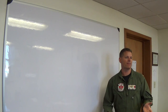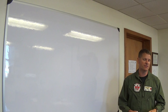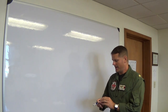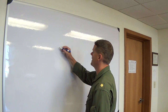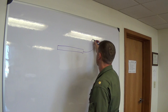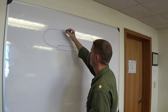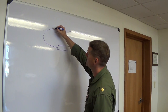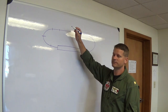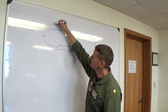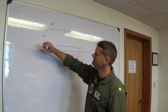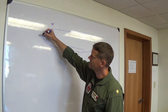Let's talk about the landing pattern as if we're going to Bruton today. Pattern altitude at Bruton is 900 feet. Your 90-position altitude is 550 feet.